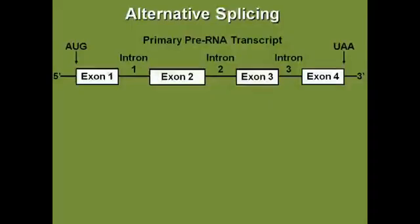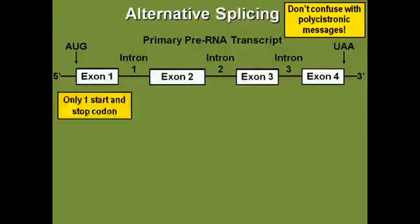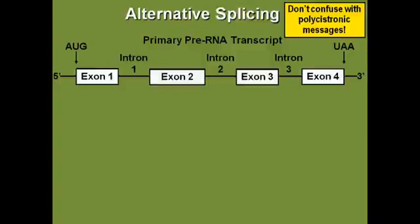In eukaryotes, we have to look at another mechanism called alternative splicing. Do not confuse alternative splicing with another mechanism called polycistronic messages. Polycistronic messages are specific to prokaryotes.